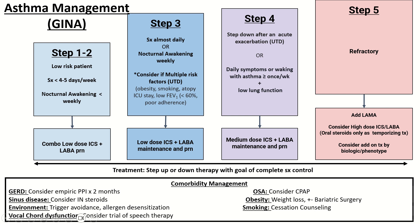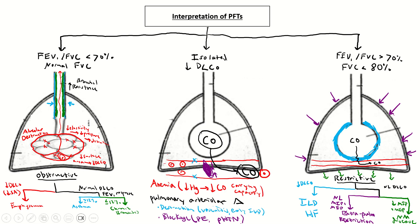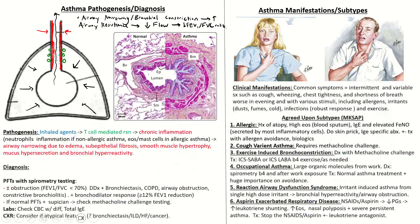Note: the correct term is vocal cord dysfunction, not vocal cord spasm. To review: this covered interpretation of PFTs with underlying pathophysiology, and a comprehensive overview of asthma — pathogenesis, diagnosis, clinical manifestations, and subtypes that may appear on exams.